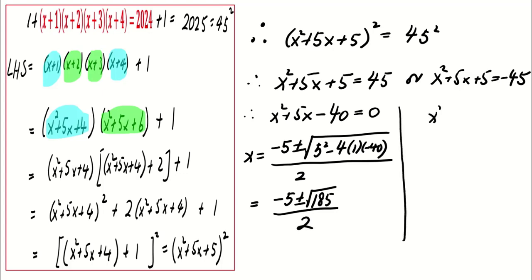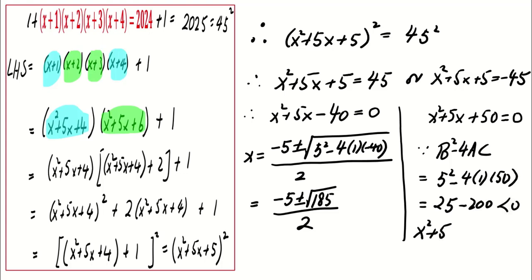For the second case, x² + 5x + 50 = 0. As the discriminant, b² - 4ac, is negative, x² + 5x + 50 = 0 has no real solution.